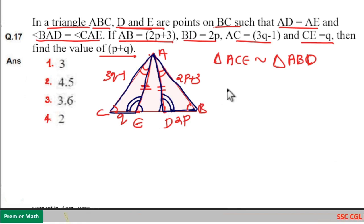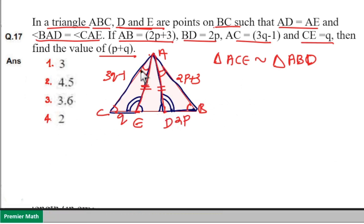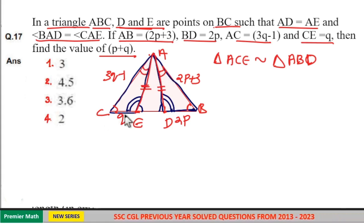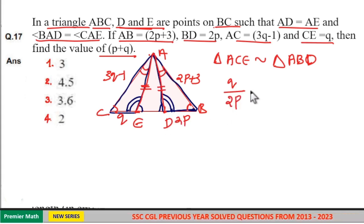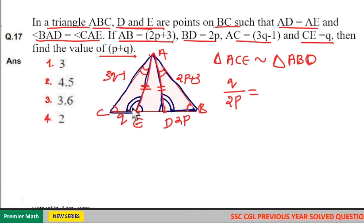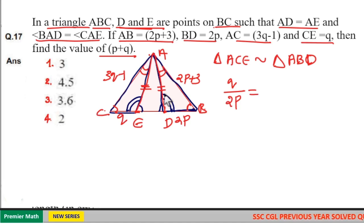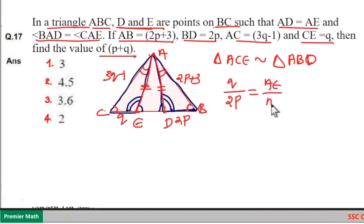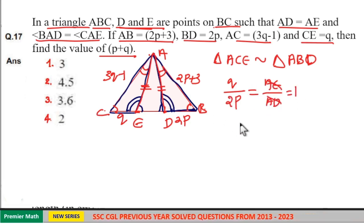The ratio of corresponding sides are equal in similar triangles. Taking the corresponding side ratio: opposite to angle B is 2P and opposite to angle C is Q. Since angle B equals angle C, the sides opposite to angle C is AE and opposite to angle B is AD. So AE divided by AD equals 1, which means Q equals 2P.